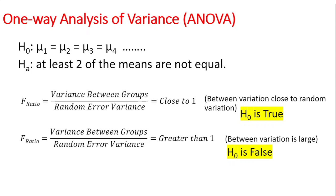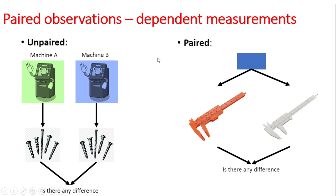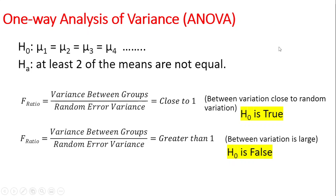In this video I'll be talking about one-way analysis of variance. In my previous video I was talking about the one-sample t-test and paired t-test, which is basically when you want to compare just two means. However, if you have more than two means then you use one-way analysis of variance, also known as ANOVA. Similar to the previous test, when we have multiple means, your null hypothesis will be that each of the means are equal to each other. Your alternate hypothesis in this case will be that at least two of the means are not equal.